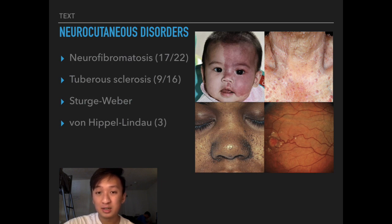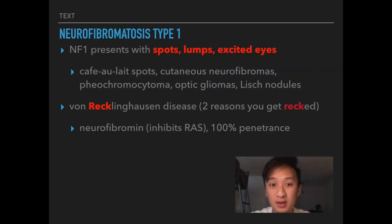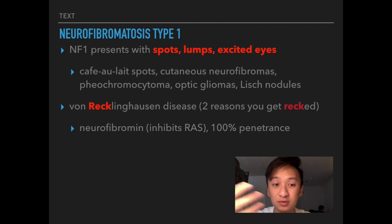For NF Type 1, you can use the sentence: 'spots, lumps, and excited eyes.' Each word in this sentence represents one classic clinical presentation of neurofibromatosis Type 1.